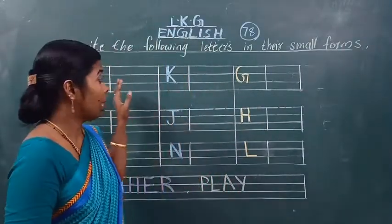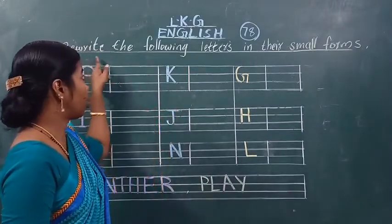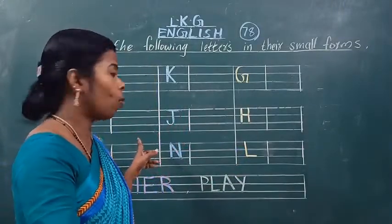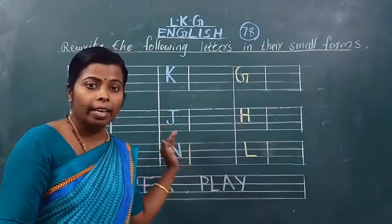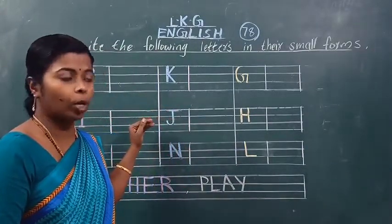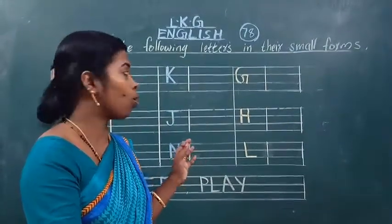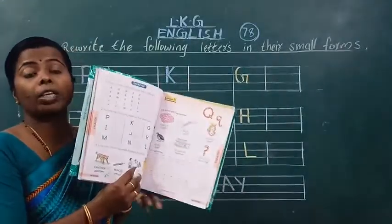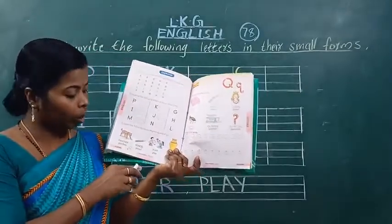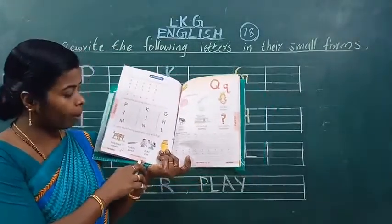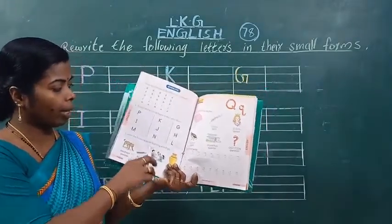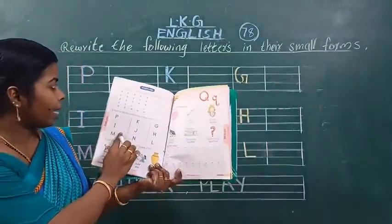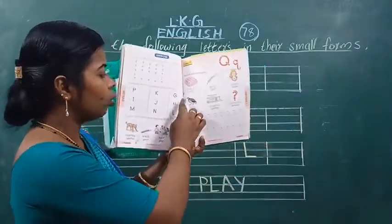All of you look here. See the board. Rewrite the following letters in their small forms. Okay. आपको इधर letters दिया हुआ है board पर। आपको क्या करना है? यह capital letter में दिया है आपको, इसको small letter में लिखना है। यह आपका all-in-one book में, second semester की book में page no. 10 में आप देख लीजिए। Rewrite the following letters in their small forms — P, I, M, K, J, N, G, H, L.